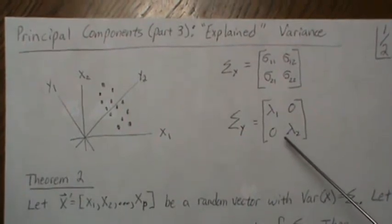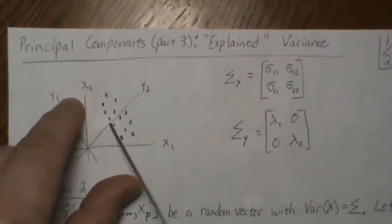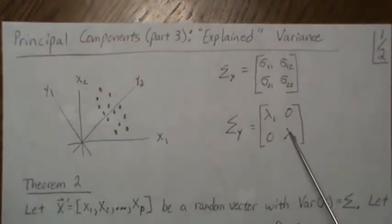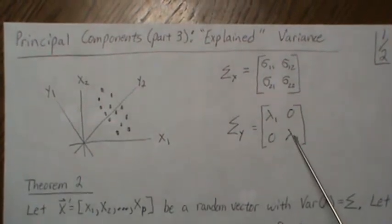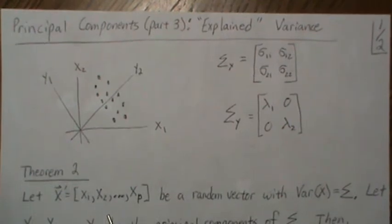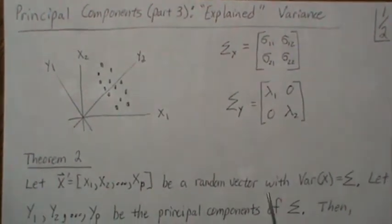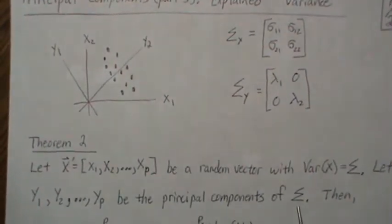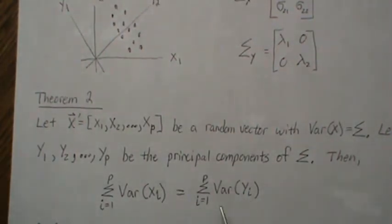The sum of the lambdas is the total variance of the data. If we rotate the axis, the data doesn't change — if we use all the principal components. So what's next is we're going to show that the sum of the variances of the x's is equal to the sum of the variances of the principal components. So let x be a random vector of p dimensions with variance-covariance matrix sigma, and let y1 through yp be the principal components. Then the sum of the variances of the x's equals the sum of the variances of the principal components. That's what we're going to prove here.